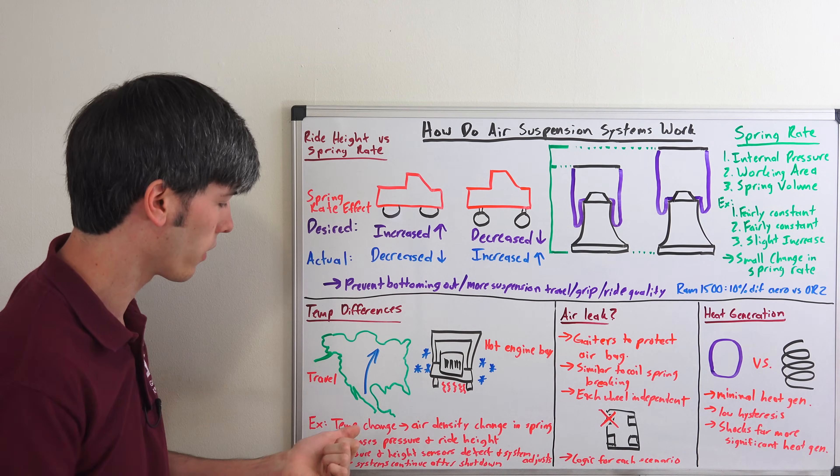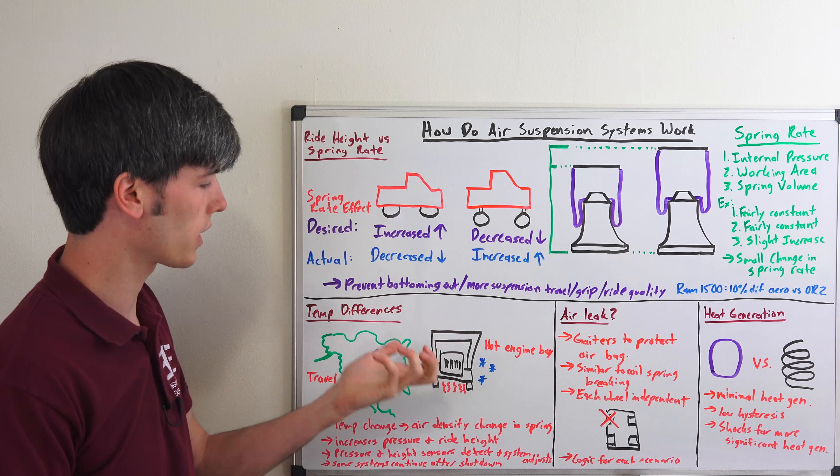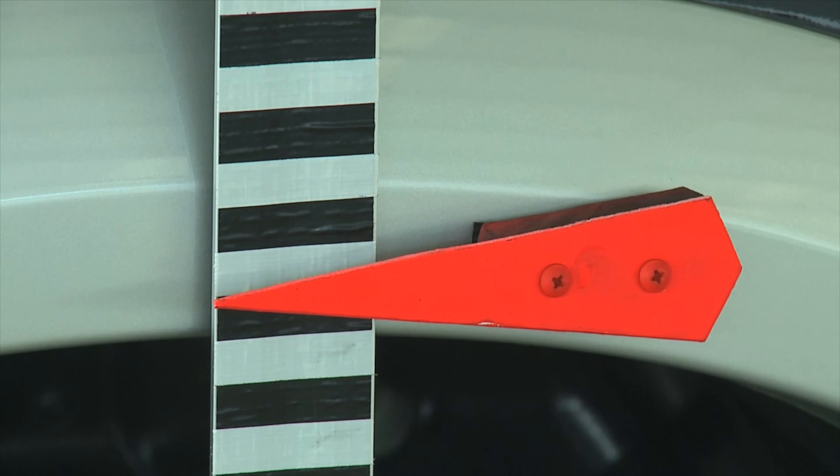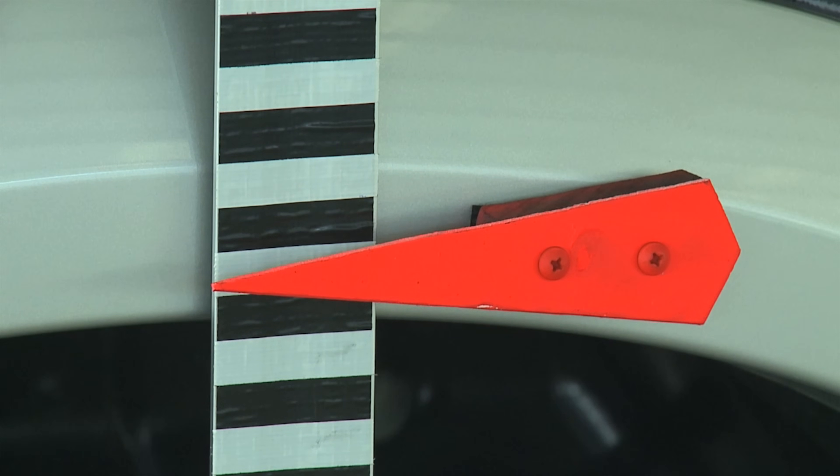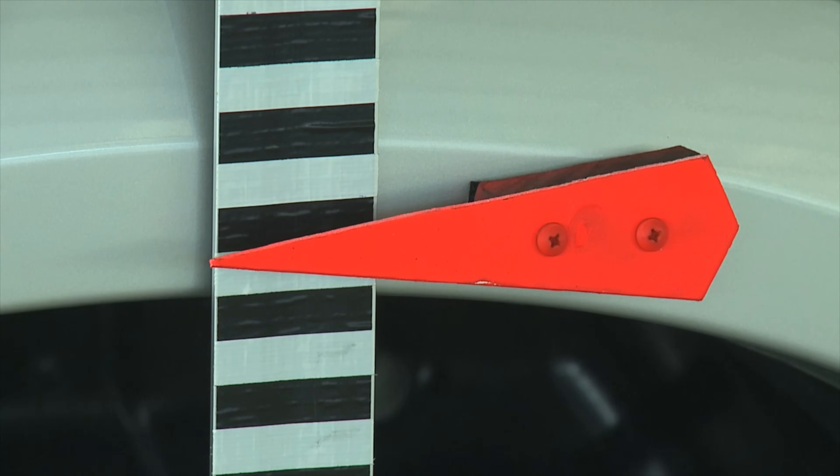That's a much more severe scenario. So what's happening here is you're going to have that temperature change and it's going to heat up those air springs. As those air springs heat up, the air density is going to change within the springs. So this increases the pressure within that spring and that's going to increase the ride height.